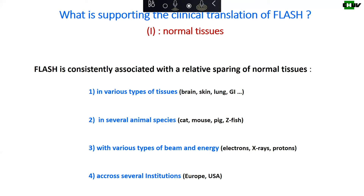The first thing to ask is about normal tissues. The striking observation is that there is a consistent relative sparing of normal tissue, observed in different circumstances. The effect was seen in various types of tissues in mice especially, and also in several animal species: cat, mouse, pig, and zebrafish.